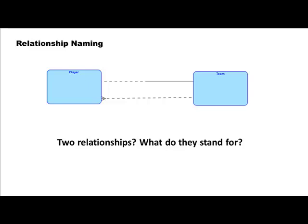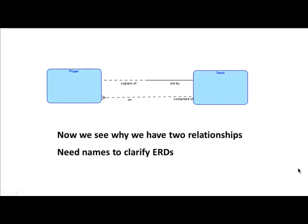Take a look at this example. We have two entity types, team and player, and we see there are two relationships shown between them. One may wonder what these two relationships are. We understand one — a team can have many players. What is the other one doing there? To clarify, we may actually need to name the relationships so that somebody looking at the diagram can make sense of what it is talking about.